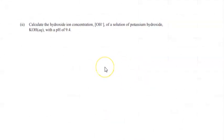So calculate the hydroxide ion concentration of a solution of potassium hydroxide with a pH of 9.4. So with this one, there's two ways that we can do it. We can either use, we can either convert this into pOH first.